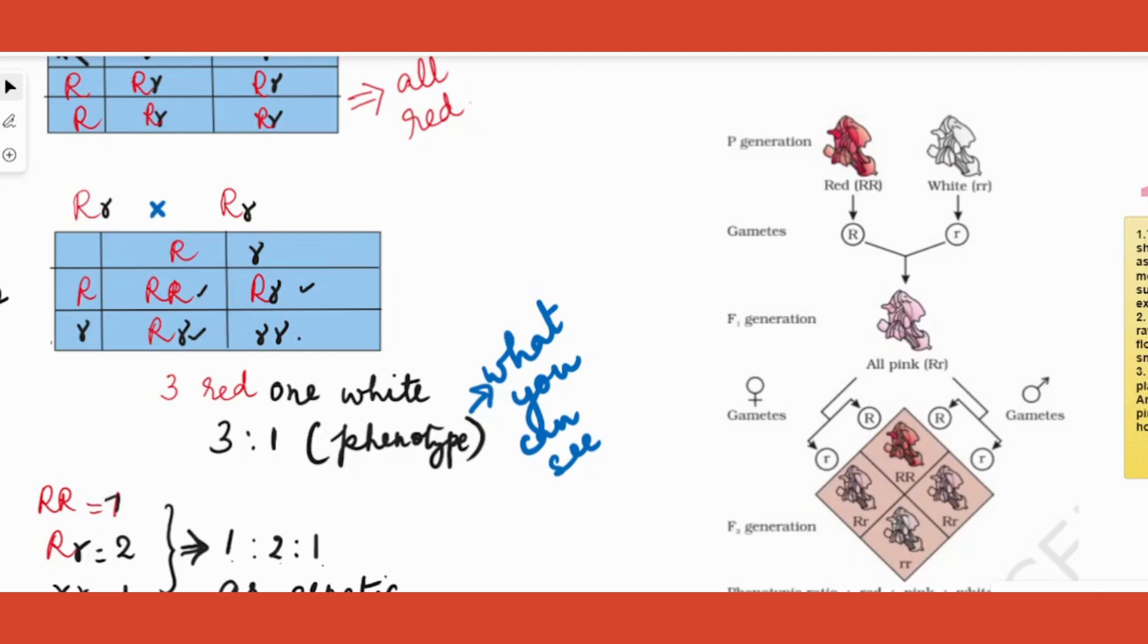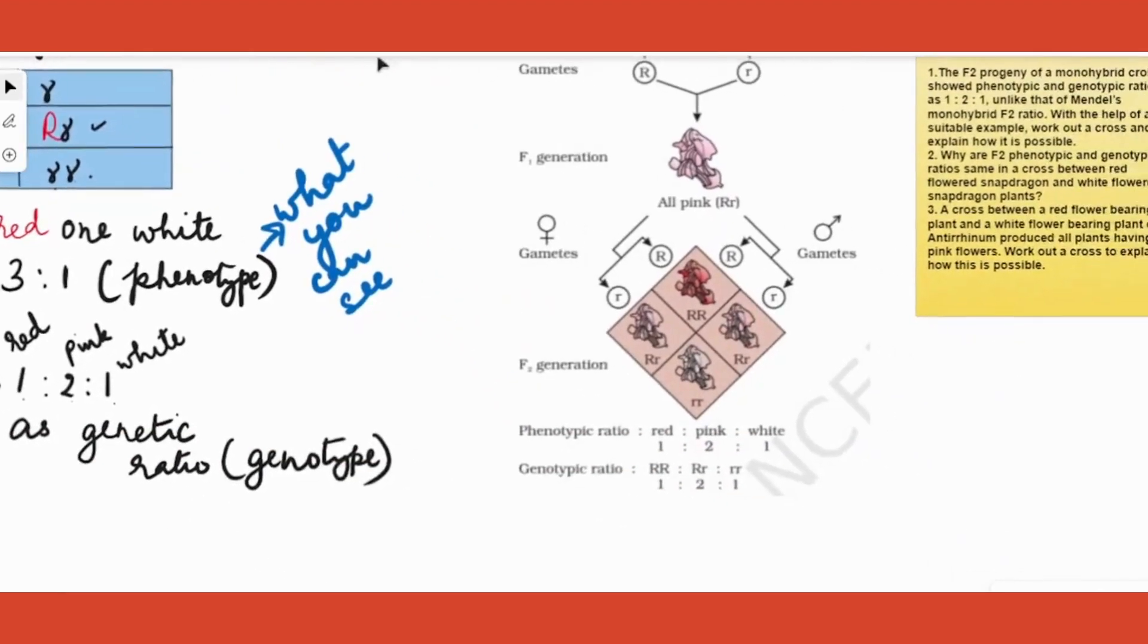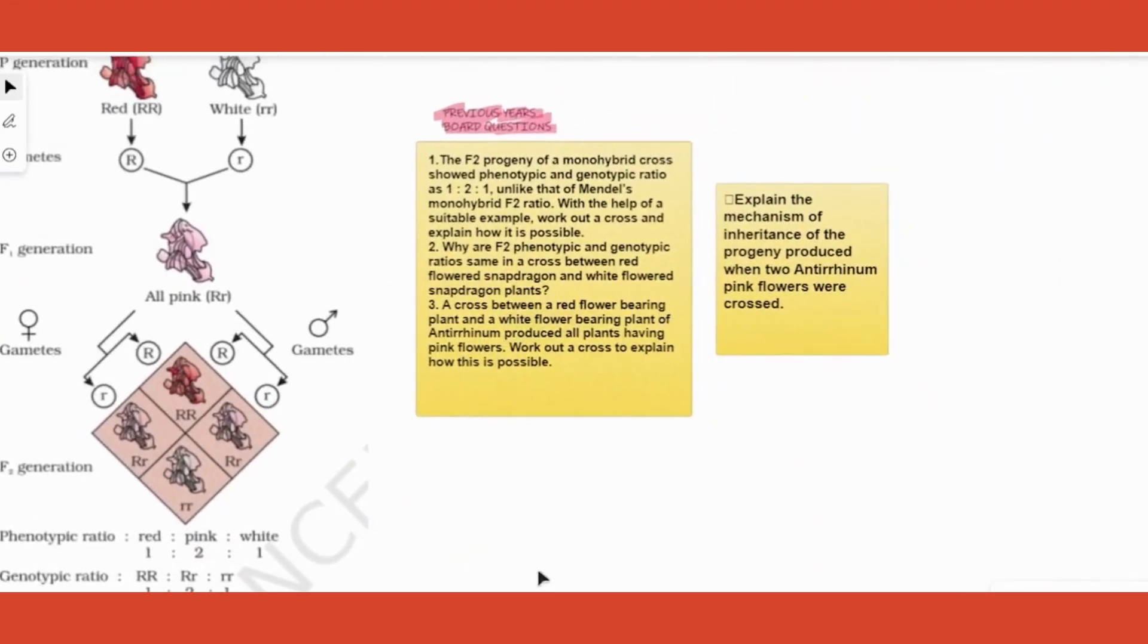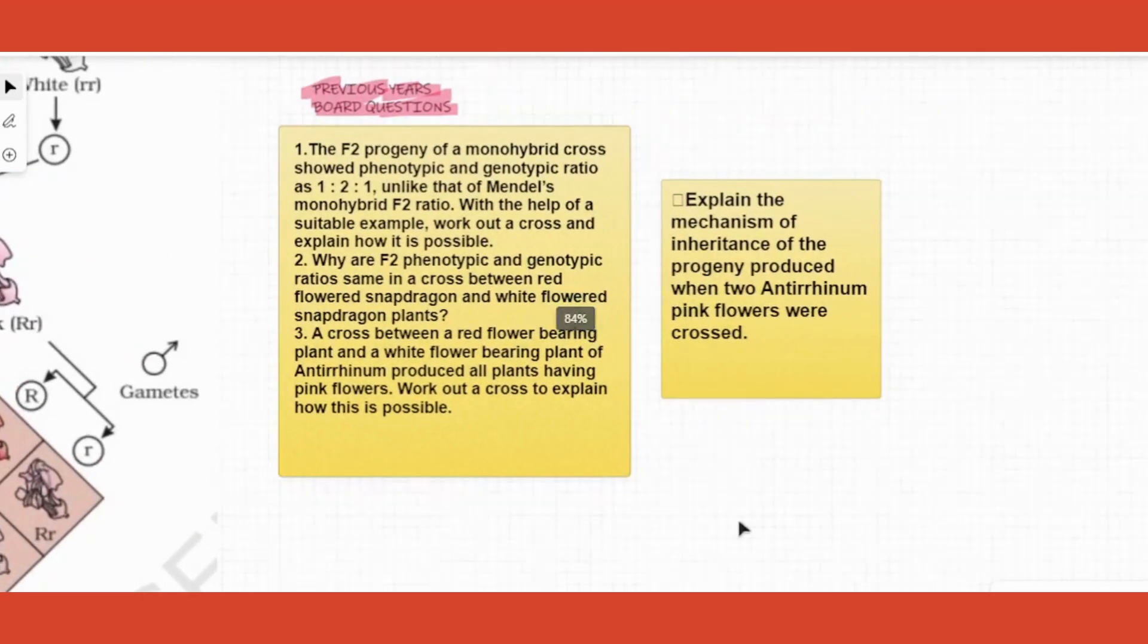This capital R R would be red, capital R small r would be pink, and small r small r would be white. What does it mean? It means that now our phenotype and genotype ratio in case of an incomplete dominant plant is same. I want you to also look at all these questions and try to answer them if you have understood the concept. Thank you.